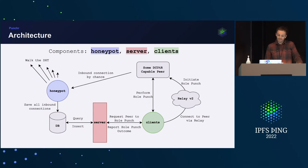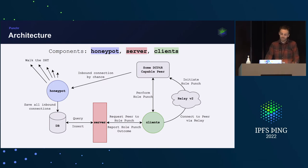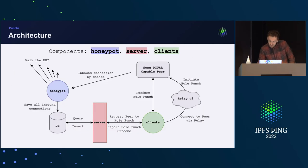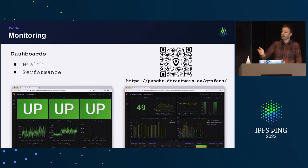The architecture roughly looks like this: the honeypot walks the DHT, increasing the chance that DCUTR-capable peers behind NATs connect to it. As soon as we get an inbound connection it's saved to the database. The server exposes the data to the clients, and the clients perform the hole punches and report back the outcomes. Everything is monitored and publicly accessible under a URL shown on the right.